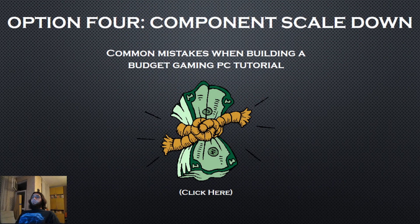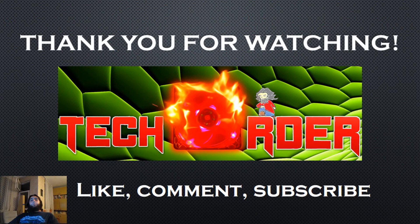Option 4 implements a scale-down of components. If the other three solutions aren't available, you can reduce the price by sacrificing the rig's speed, features, and aesthetics. I've described this method in detail in the final section of my 'Common Mistakes When Building a Budget Gaming PC' tutorial. This concludes my in-depth pricing tutorial — while the specific build examples will become obsolete over time, the general principles will remain the same.